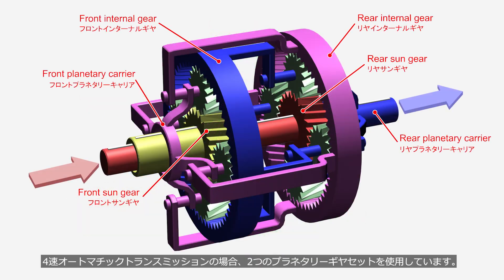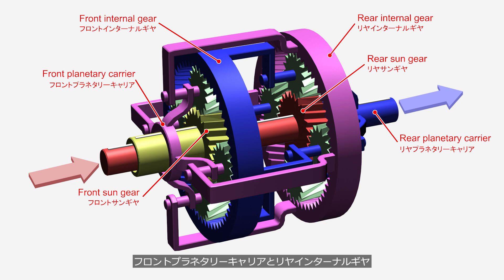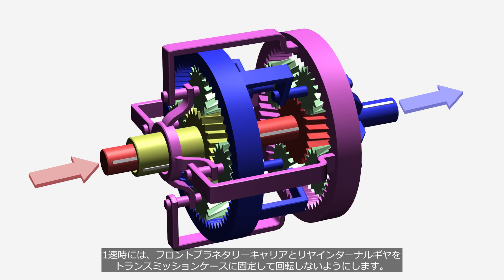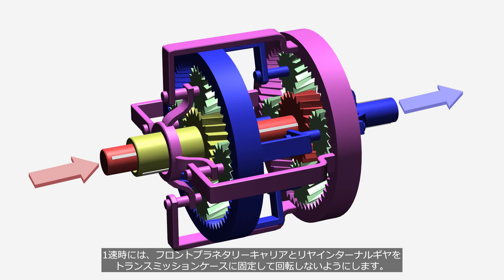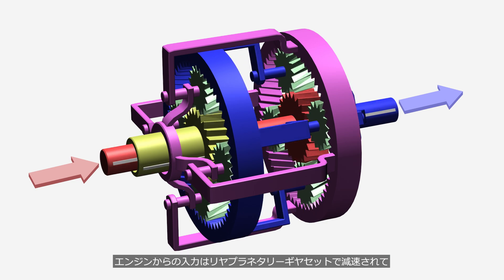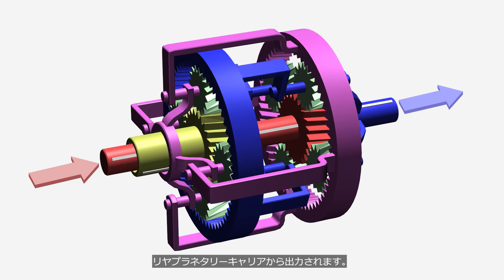In the case of a four-speed automatic transmission, two planetary gear sets are used. The engine output is transmitted to the rear sun gear via the torque converter, and output from the rear planetary carrier to the wheels. The front planetary carrier is connected to the rear internal gear, and the front internal gear is connected to the rear planetary carrier. At first gear, the front planetary carrier and rear internal gear are fixed to the transmission case to prevent them from rotating. The input from the engine is reduced by the rear planetary gear set, and then output from the rear planetary carrier.